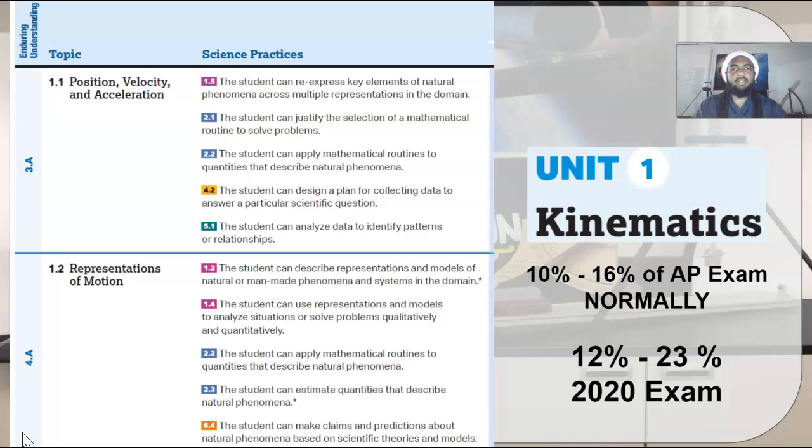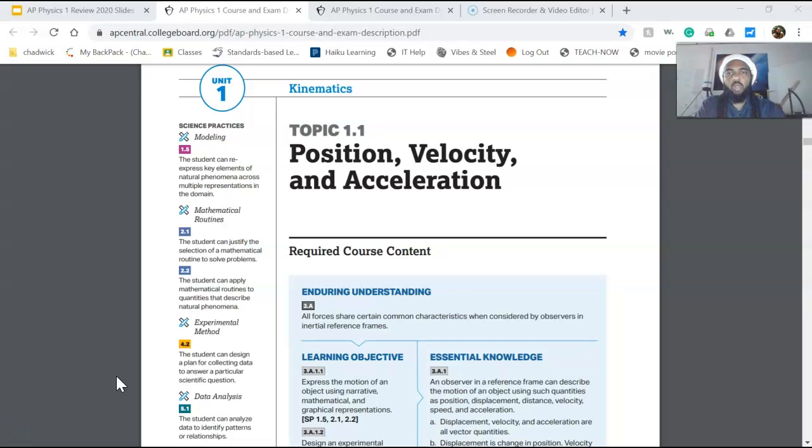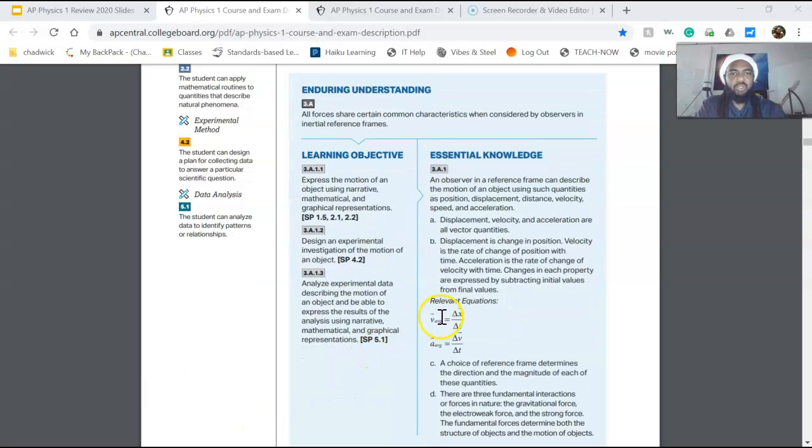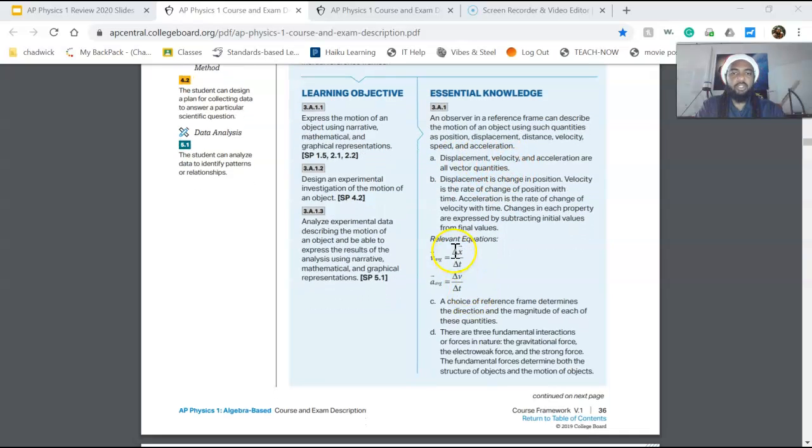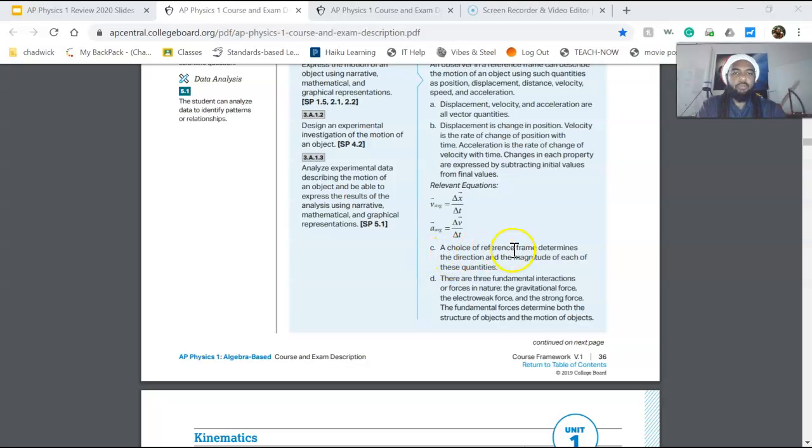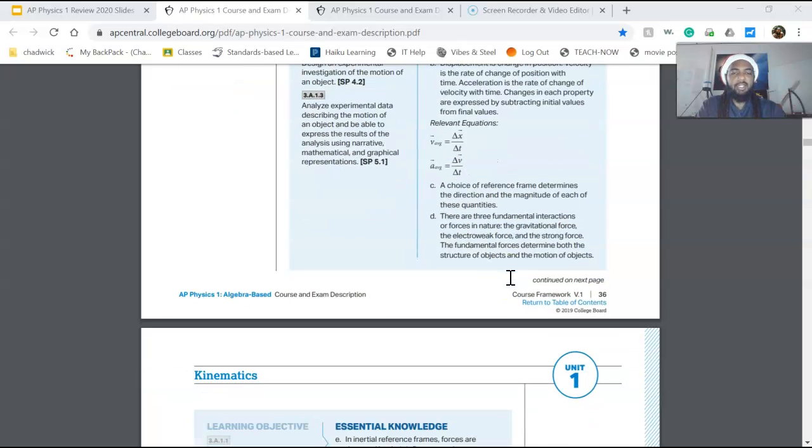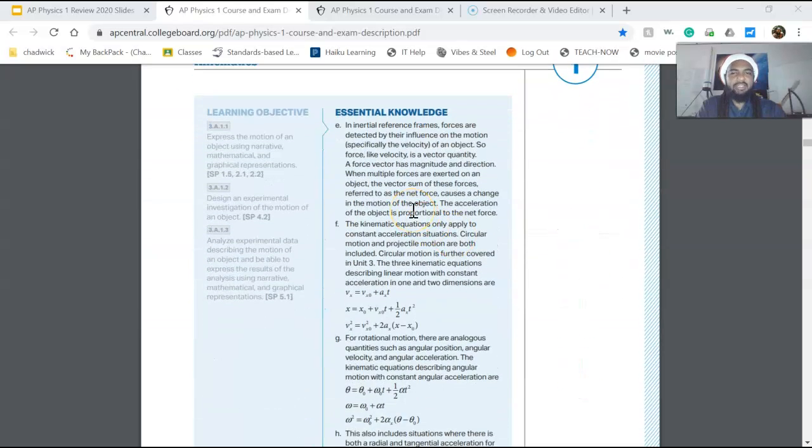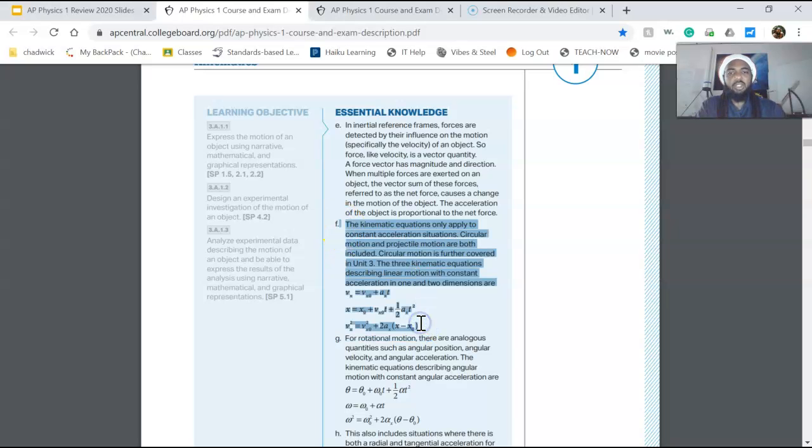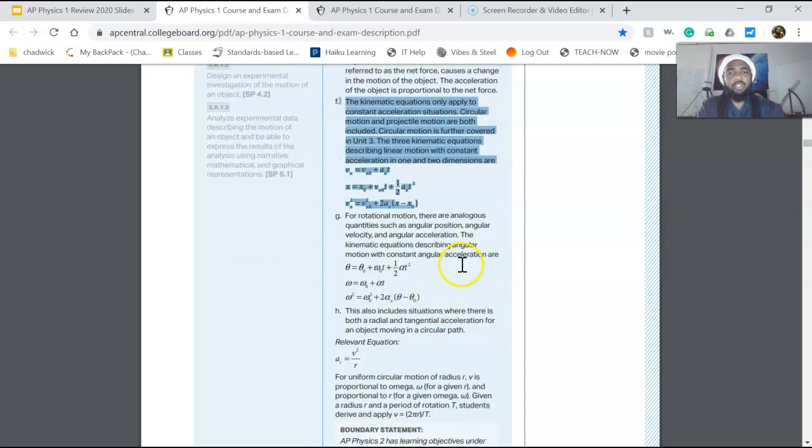Let's go ahead and take a look at the syllabus in more detail. Here we have topic 1.1 position, velocity and acceleration. The essential knowledge is really just definitions of displacement, velocity and acceleration including equations. It talks about reference frames, forces and types of forces, not hugely significant for this unit but somewhat relevant. It talks again about inertial reference frames and then there are the kinematic equations. This is essential knowledge but these equations are provided on the equation sheet.